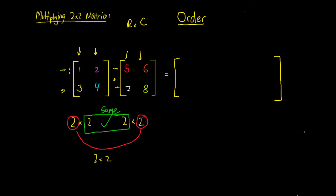We've got our first row and first column — we've got the number 1. We're going to multiply that with the first row, first column of our second matrix, and we've got the number 5. So our first term is going to be 1 multiplied by 5. Then we add our next term: the next number in the row is 2, and we multiply that by the next term in our column, which is 7. So we've got 2 multiplied by 7. That takes us to the end of our first column.